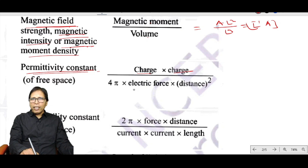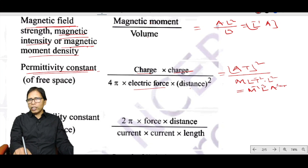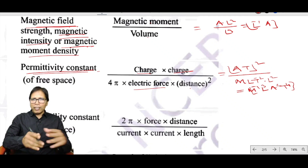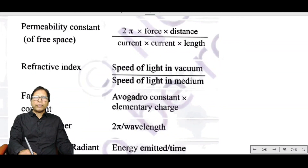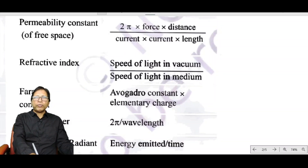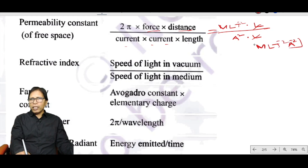Permittivity equals charge² divided by (electric force × distance²): (AT)² ÷ (MLT⁻² × L²) = M⁻¹L⁻³A²T⁴. Permeability equals force × distance divided by (current² × length): MLT⁻² × L ÷ (A² × L) = MLT⁻²A⁻².